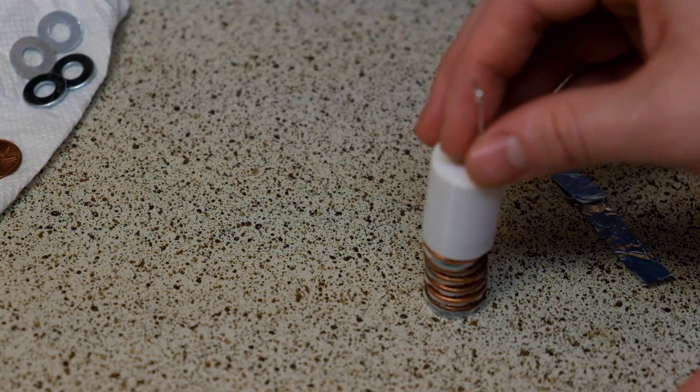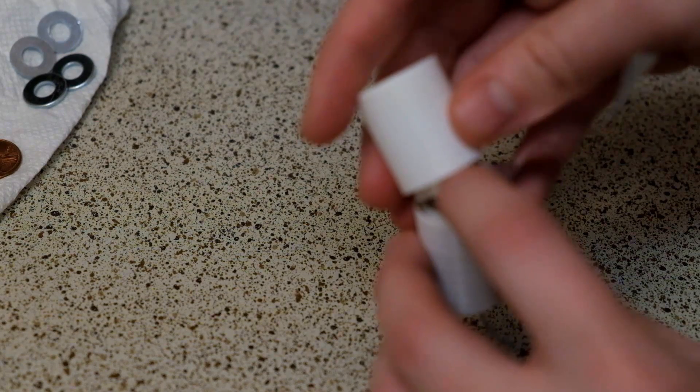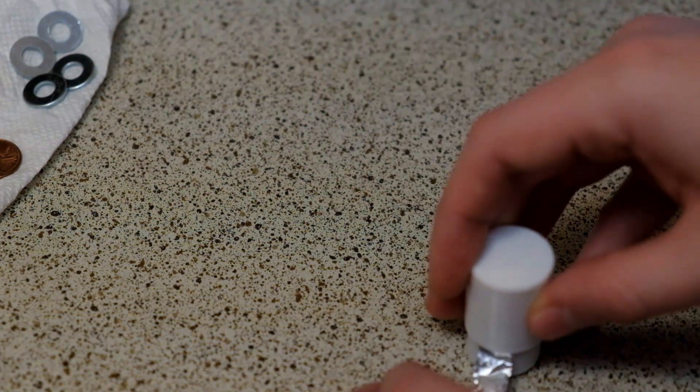Place this over the stack of pennies and turn it all upside down, so you can place the other foil at the bottom of the stack. This will act as our negative terminal.